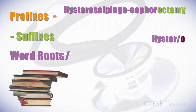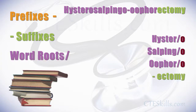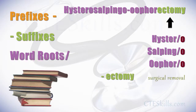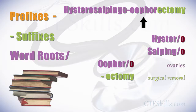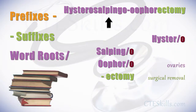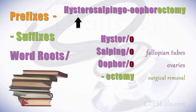What does hysterosalpingooophorectomy mean? Let's follow the formula provided earlier and break down the term into elements — prefixes, suffixes, and word roots — beginning from the right and moving to the left. Ectomy means surgical removal. Oophoro is a root word for ovaries. Salpingo is a root word for fallopian tubes. And hystero is a root word for uterus.